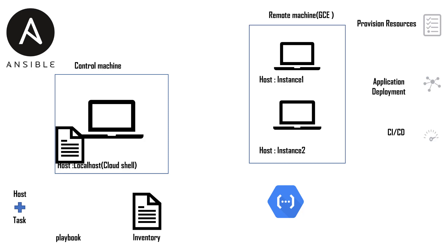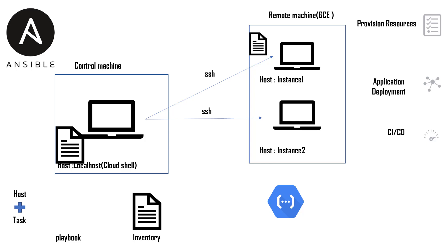When that playbook is read by the control machine, SSH is triggered to both instances and those instructions are sent directly to them. Instance one will deploy the web server and the application, and once the deployment is done the tasks are removed. The same is done for instance two — those instructions like creating the web server and uploading the application are sent, and once done those tasks are removed.